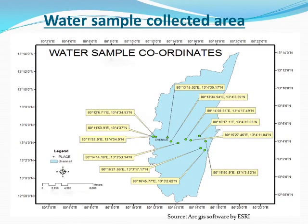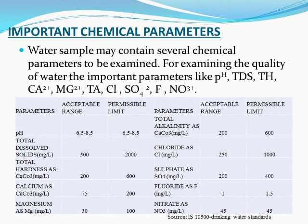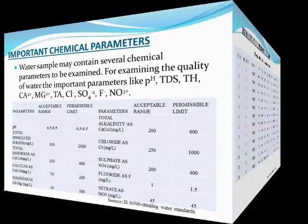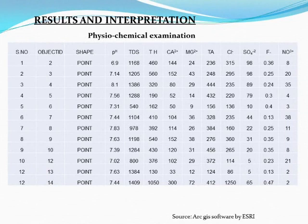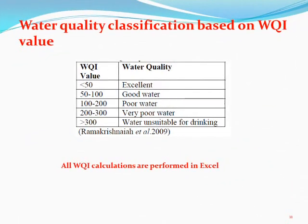The water samples are collected and then the coordinates are fixed in the RJA software. The coordinates are collected using Android apps. The physical and chemical parameters are examined as per IS 10500 and then checked with the permissible limit. The physiochemical examination is performed and then the results are inputted into the RJA software. Then the water quality index is checked with respect to the water quality value.